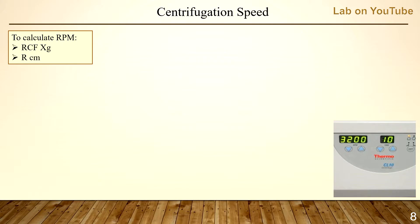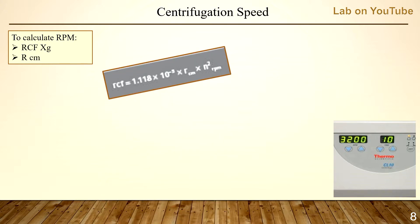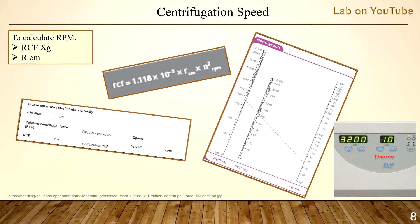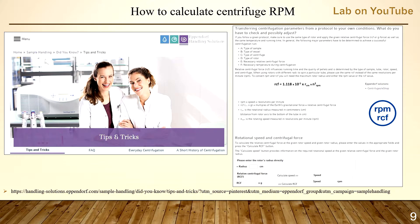After obtaining the RCF and radius, it's time to calculate the RPM. There are three ways: number one, using a formula; number two, a chart or nomograph; and number three, a speed calculator. There is a useful website I recommend — it covers almost all aspects related to centrifuges, including the formula and speed calculator. I'll put the link below this video.